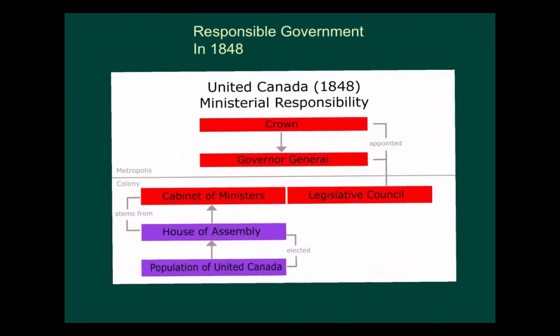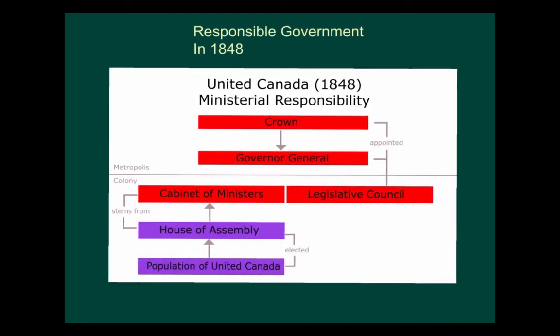In the 1848 elections, all those reformers under Baldwin and La Fontaine won the majority of the seats in the Legislative Assembly. In that same year, Great Britain granted responsible government to United Canada — they finally got responsible government. The new governor at that time, Lord Elgin, asked Baldwin and La Fontaine to form the Executive Council.